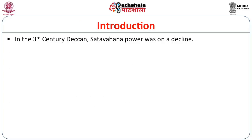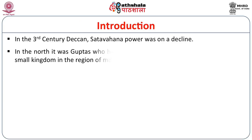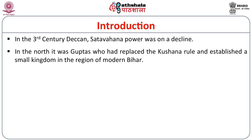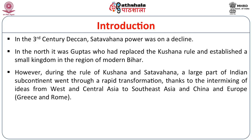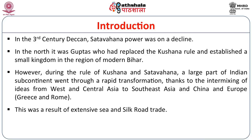In the 3rd century Deccan, Satavahana power was on a decline and in the north, it was the Guptas who replaced the Kushana rule and established a small kingdom in the region of modern Bihar. During the rule of Kushana and the Satavahana, a large part of the Indian subcontinent went through rapid transformation, thanks to the intermingling of ideas from West and Central Asia to Southeast Asia, China, Europe — mainly Greece and Rome — due to extensive trade done both overland and on sea through the Silk Route.